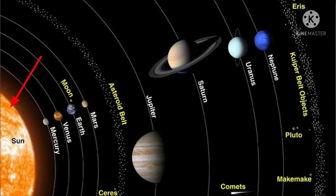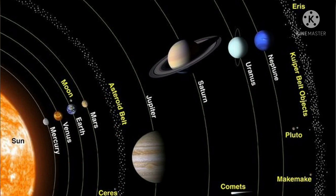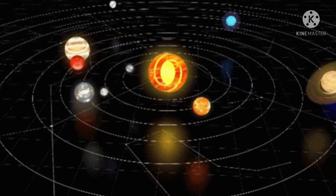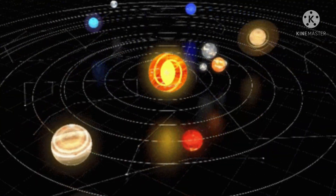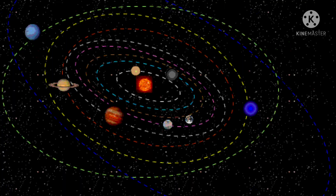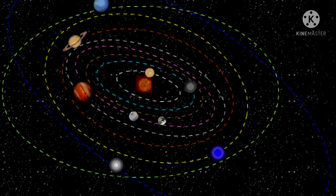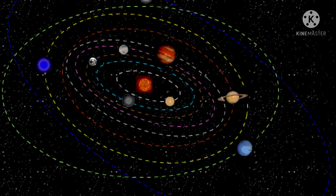Our solar system includes the sun, planets, dwarf planets, asteroids, meteoroids, comets, and moons that orbit around it due to its gravity. Our sun is just one of about 200 billion stars in our galaxy. There are eight planets in our solar system, and all eight planets travel around the sun in different orbits.